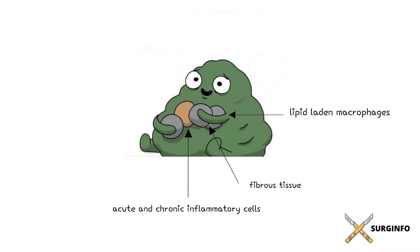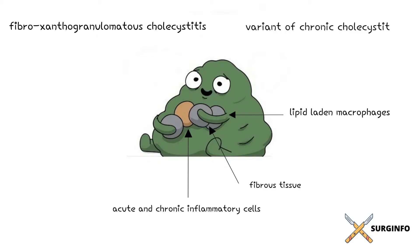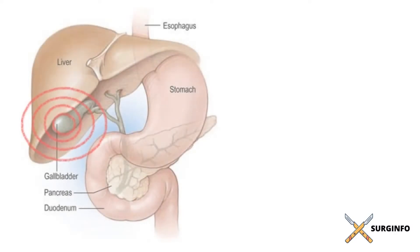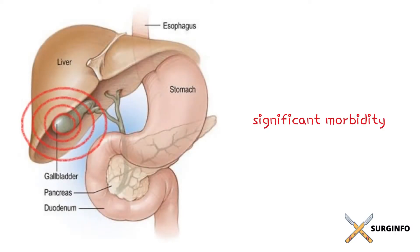Xanthogranulomatous cholecystitis, previously known as fibroxanthogranulomatous cholecystitis, was initially described as a variant of chronic cholecystitis. However, it is now recognized as a distinct clinical entity that can lead to significant morbidity, as the inflammatory process usually extends into the gallbladder wall and adjacent structures.